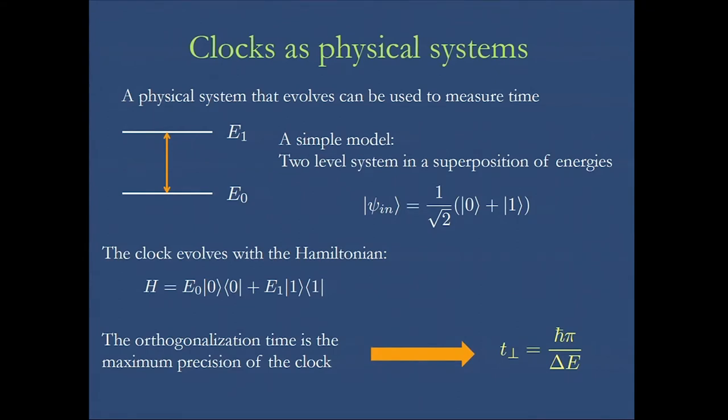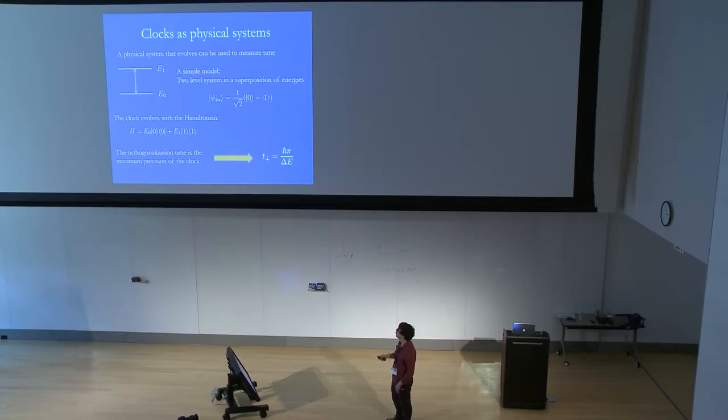So the way we use this as a clock is we prepare this initial state, we measure the system, and if the state has changed, if we find a different state, we say one second has passed or one unit of time has passed. If the state is the same, zero units of time has passed.